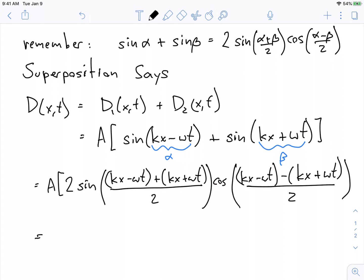Cosine of (kx - ωt - kx - ωt) divided by 2. So what does this give? This gives 2A to begin with. I see that I get kx plus kx but then minus ωt plus ωt. So parts of those cancel out. So I get sine of 2kx divided by 2.